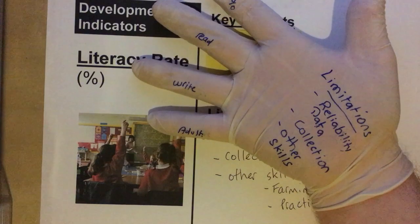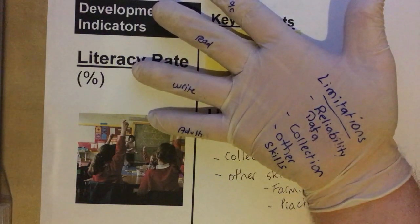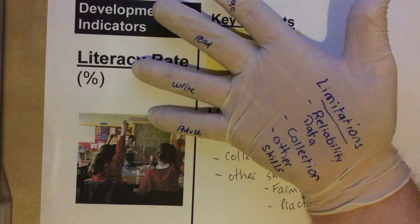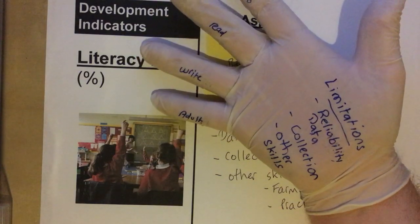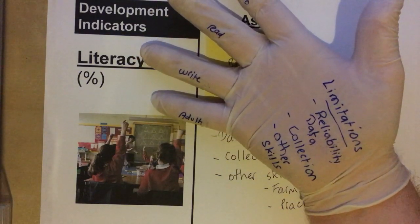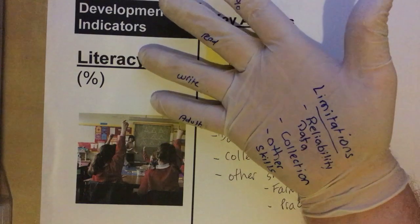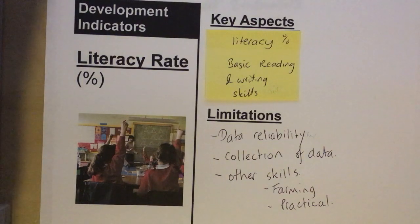Some of the limitations are the reliability of the data, the consistency of the data, difficulties in collecting the data, and the fact that it doesn't take into account some of the other skills that people might have. Thank you for watching this episode about literacy rates as a development indicator on White Glove Geography.